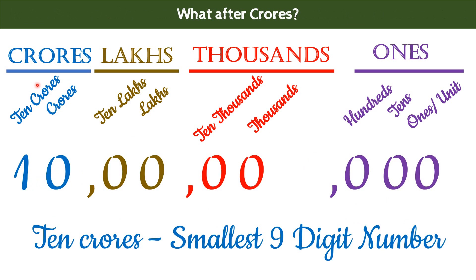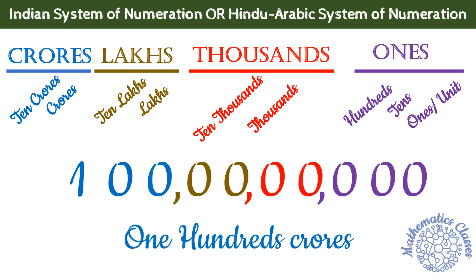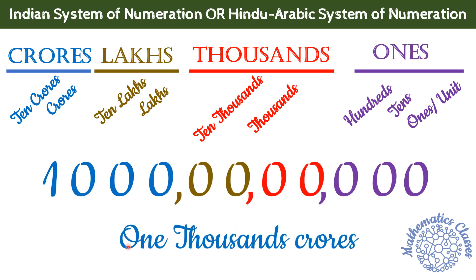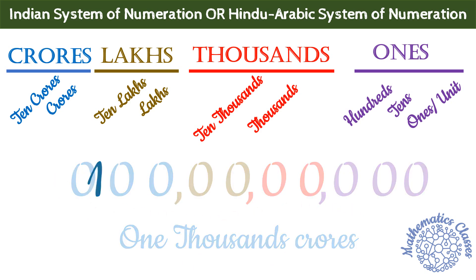Now, what comes after Crores? After Crores in the Indian system, we do not use any specific period — we directly read in Crores. Like, the number having eight zeros is read as 10 Crores, and it is also the smallest nine-digit number. Then the number with nine zeros is read as 100 Crores. Similarly, 1000 Crores has 10 zeros, and so on.